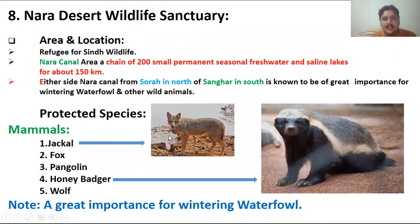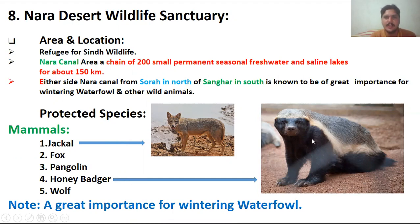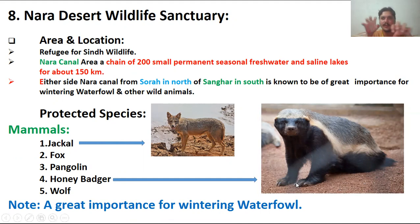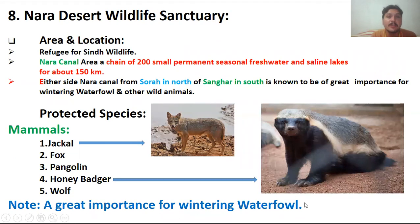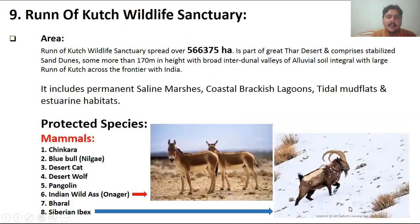The protected species of the Nara Desert Wildlife Sanctuary include the jackal, foxes, pangolins, and honey badgers — a very strange mammal whose body looks like a small bear but with long sharp claws used for digging. Also present are wolf species. It is of very great importance as a wintering area for waterfowl.